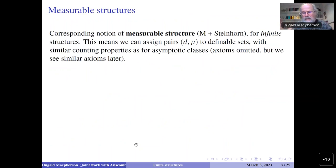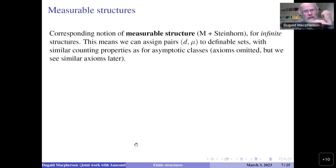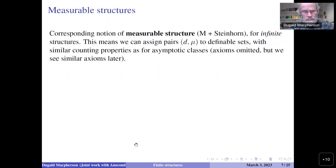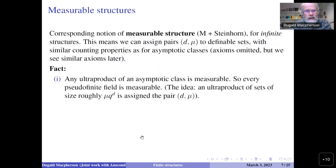This was all about finite structures, but there's a corresponding infinitary notion — a measurable structure — developed in the paper of myself and Steinhorn. The idea is that for any definable set you can assign a pair (d, μ): d a positive integer, μ a real number. You get similar counting properties as hold for asymptotic classes, axiomatized as what should hold for an ultraproduct of an asymptotic class. Any ultraproduct of an asymptotic class is measurable.